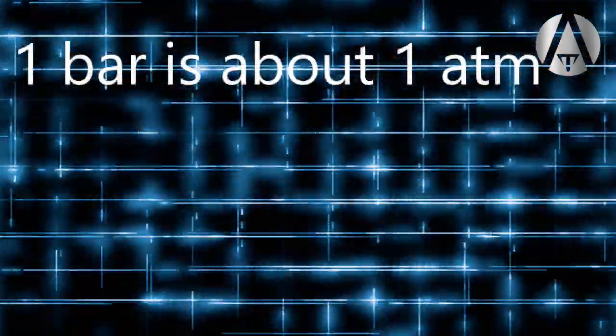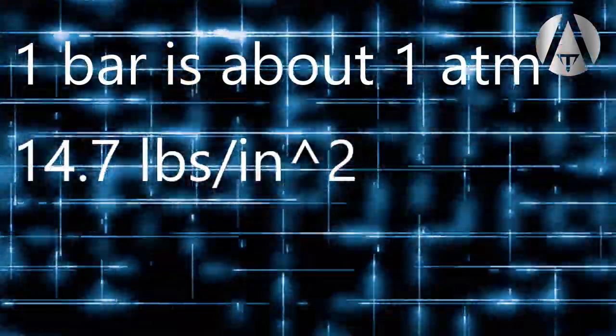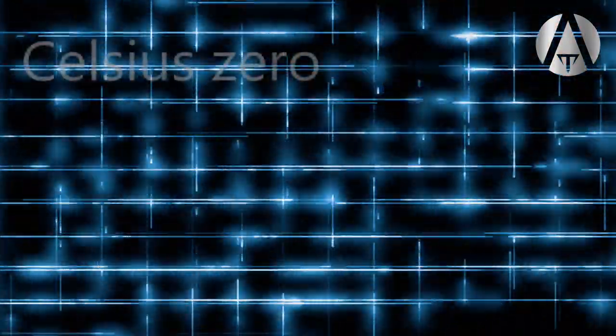Now remember that one bar is about one atmosphere at Earth's sea level, which is also about 14.7 pounds per square inch, or 101,325 pascals of pressure. Also remember that, while Celsius starts at zero, being the freezing point of water,